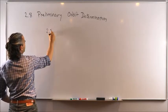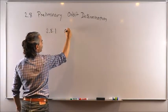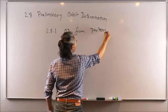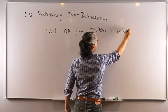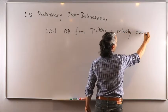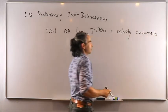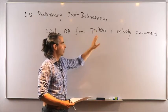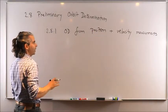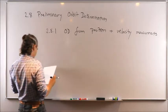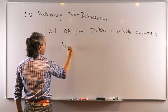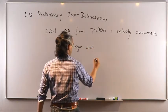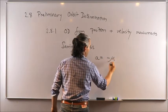I'll refer to this as OD, or orbit determination, specifically from position and velocity measurements. We'll see another technique for orbit determination later that uses other types of measurements, but this one is the most basic orbit determination technique. The first thing we want to do is calculate our semi-major axis a, using the fact that a equals negative mu over two times the orbital energy.